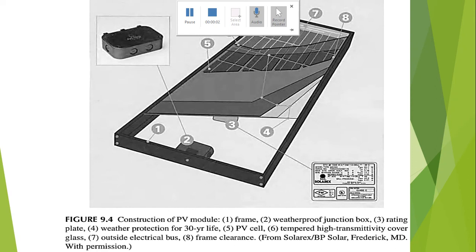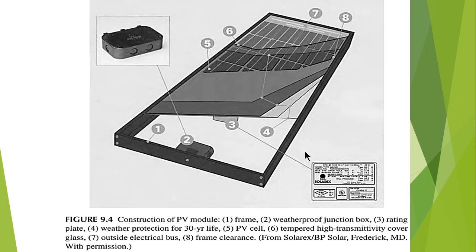Hello and Assalamu Alaikum. This is continuation lecture number 15. In this part of the lecture, I will discuss the main parts of the solar panel. The first one is the frame, the second is the junction box, the third is the rating plate, and the fourth is the weather protection plate.